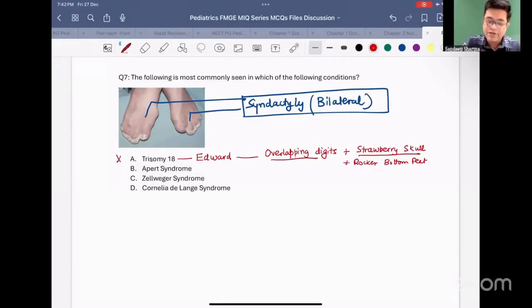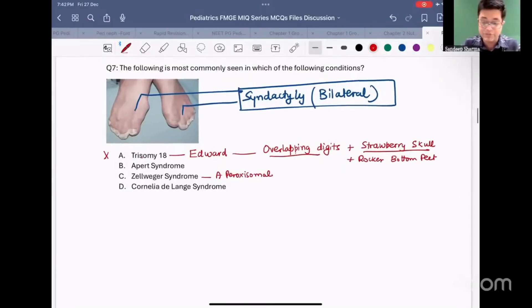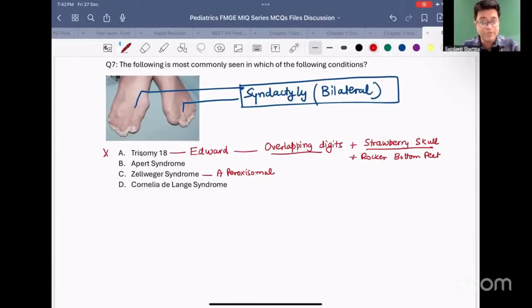Then we have Zellweger syndrome. What is Zellweger syndrome? It is a peroxisomal disorder. We are doing a quick review of these syndromes also, because if you look at the PYQs, you will come across these options in some or the other question.